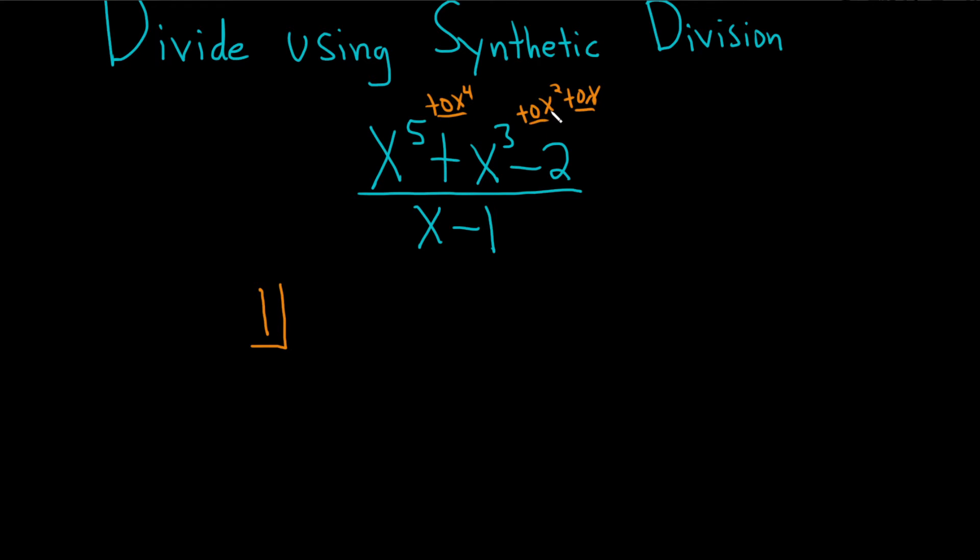You don't have an x to the fourth, you don't have a squared, and you don't have an x. So you want to replace them. To make it a little bit more clear, I'll write it here. Here, x to the fifth plus 0x to the fourth plus x cubed plus 0x squared plus 0x minus 2. This makes it a little bit more clear so you see.